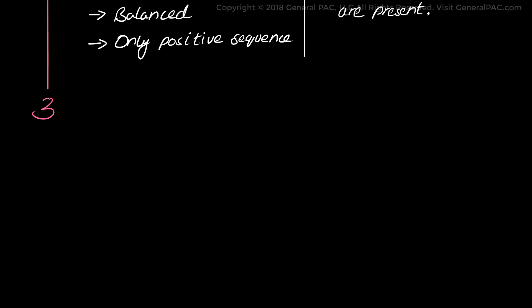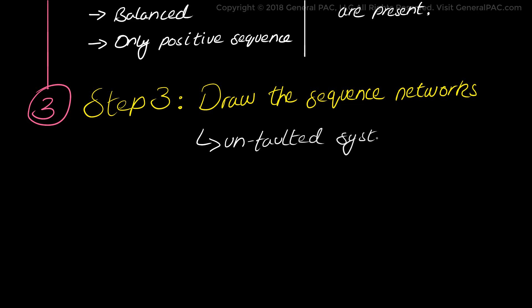Now in step number 3, the third step, we draw the sequence networks for the unfaulted system. Now unfaulted system means that we are drawing the individual sequence network diagrams for the system. And in the later steps, we will connect the diagrams in a very particular way. So the unfaulted system is simply the individual sequence network diagrams.